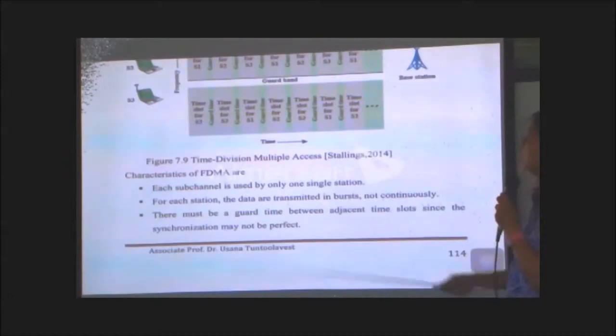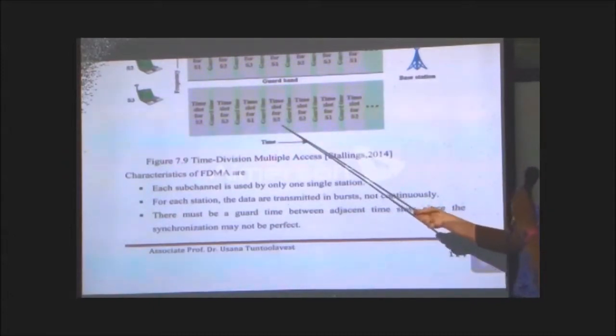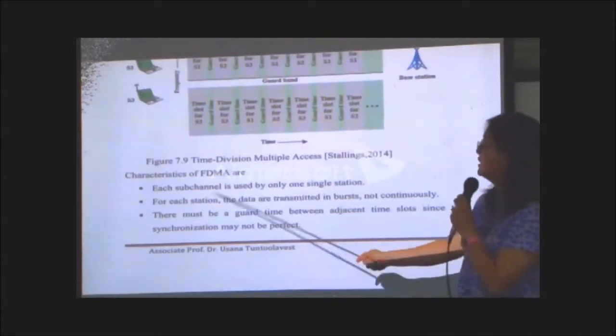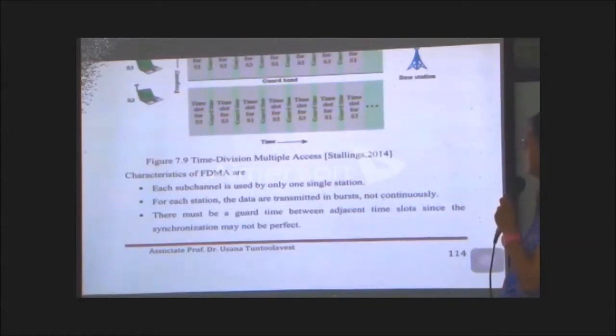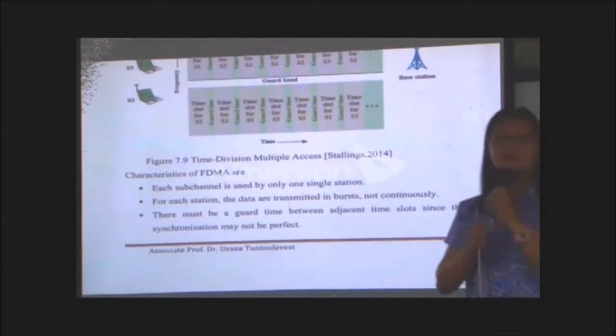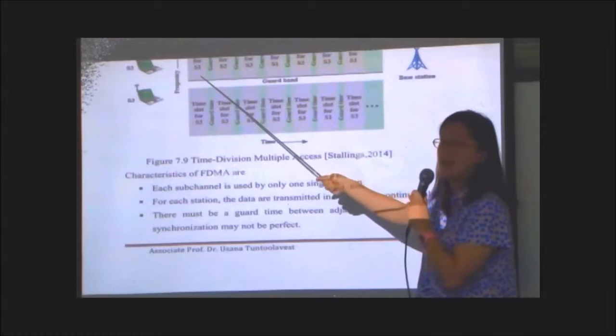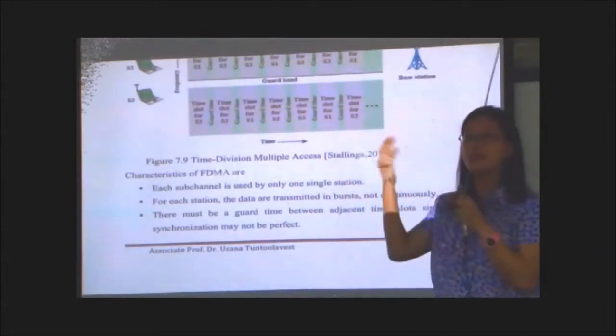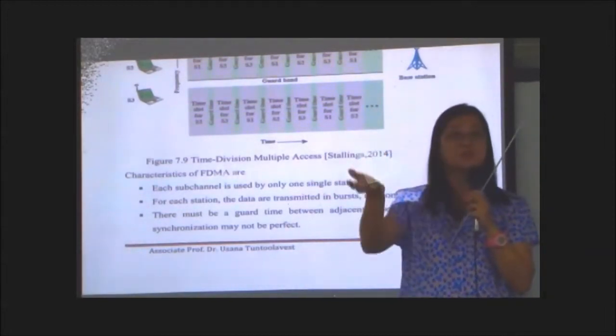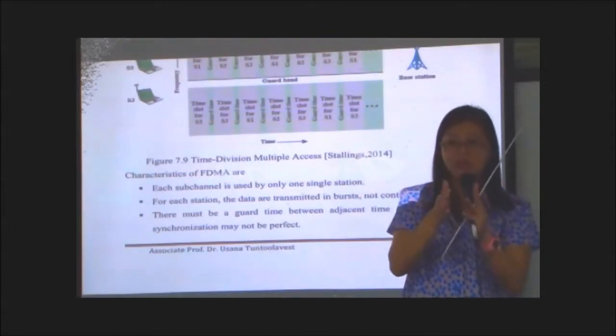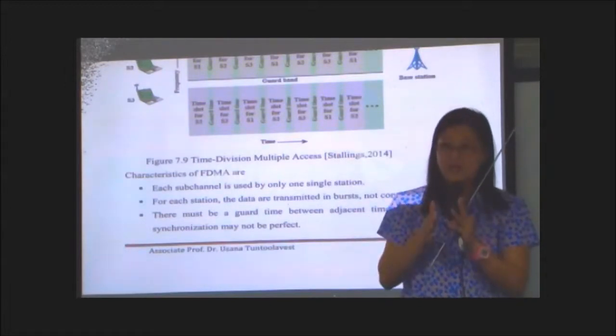If user number two is not sending, then you have a problem. I mean, you waste the capacity. It's not efficient because this will be idle. Now, for each of the stations, the data are transmitted in bursts and not continuously because when you send, user one has to send at this time. And then you have to wait for everyone else to send before you can send again. So you send like a short burst and you wait for a long time and you send again a short burst.